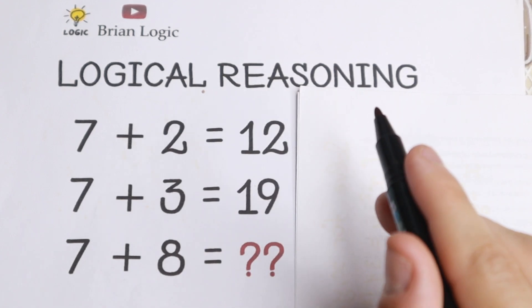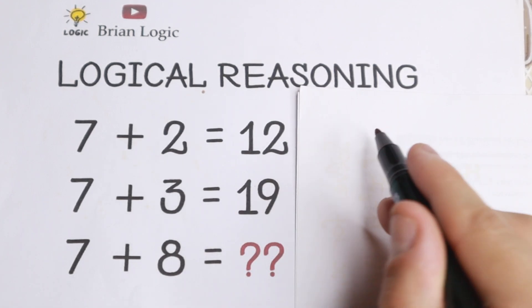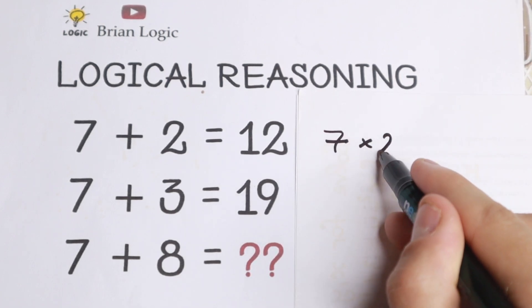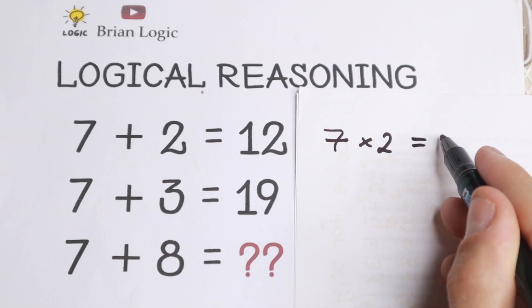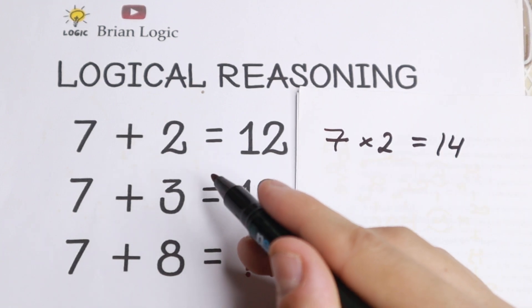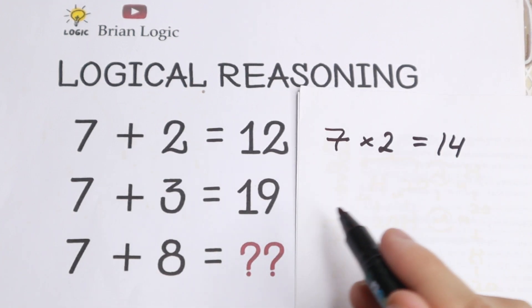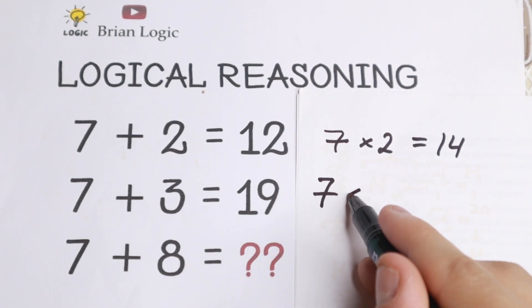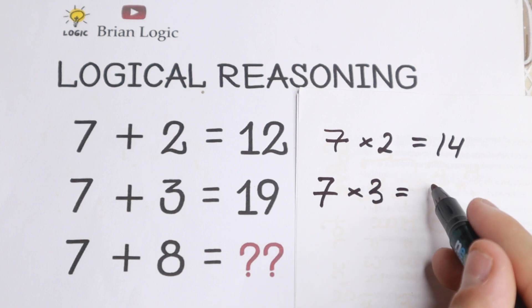If we not add but multiply it, so if you multiply this 7 times 2, if you multiply it we will have 14. So let's change this addition by multiplication, and right now on the bottom, if you multiply it 7 multiplying by 3, we will have 21.